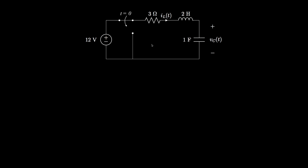Here's a second-order circuit with a 3 ohm resistor, a 2 Henry inductor, and a 1 farad capacitor all in series along with a 12 volt source that is switched out of the circuit at time t equals zero.